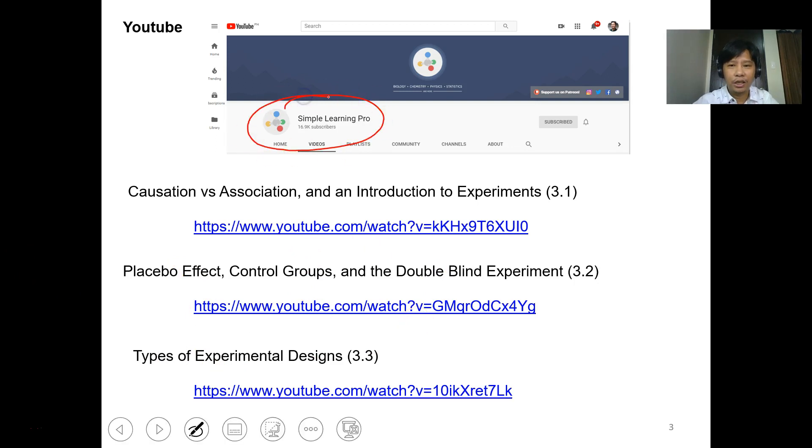You can also check this one on YouTube under Simple Learning Pro. You can check causation and association, the placebo effect, control groups, and double-blind treatments and types of experimental design. I advise that you watch this video first before you continue with this lesson.